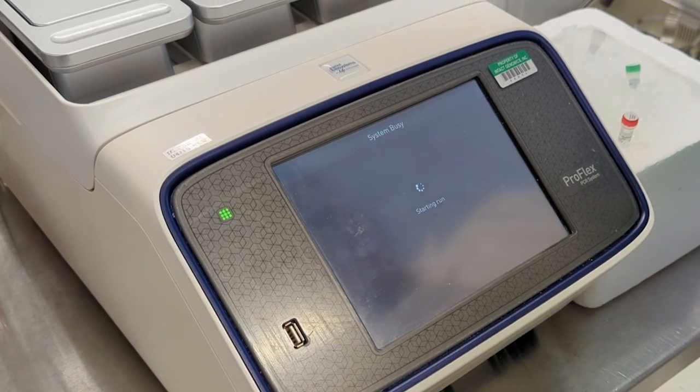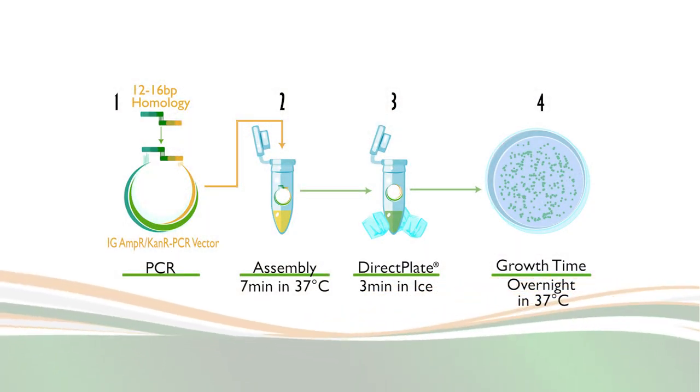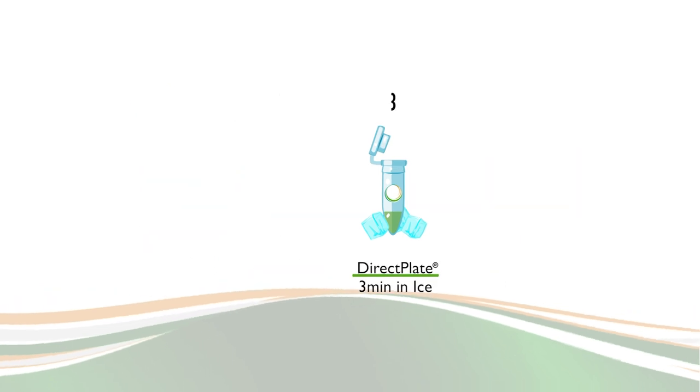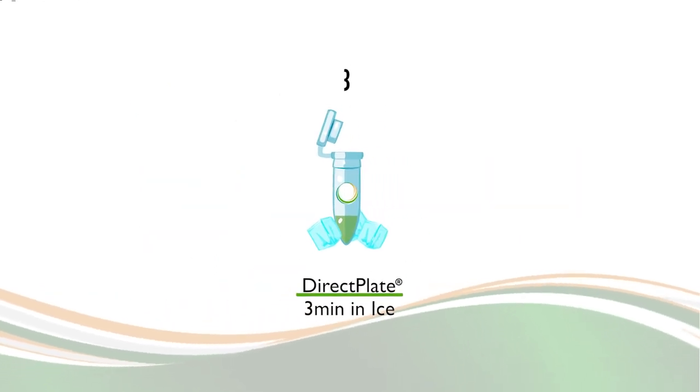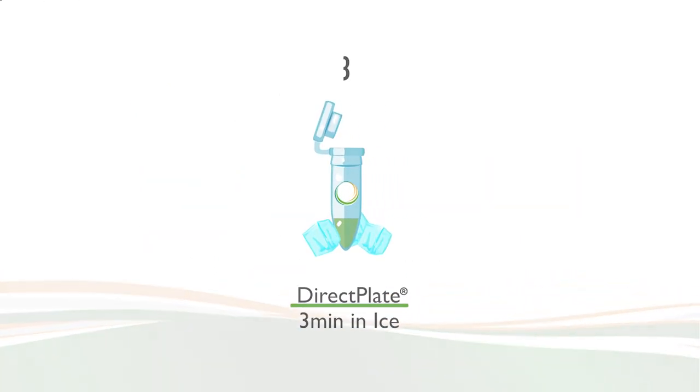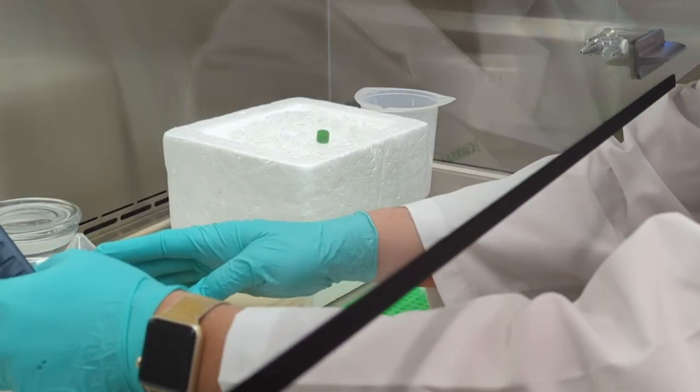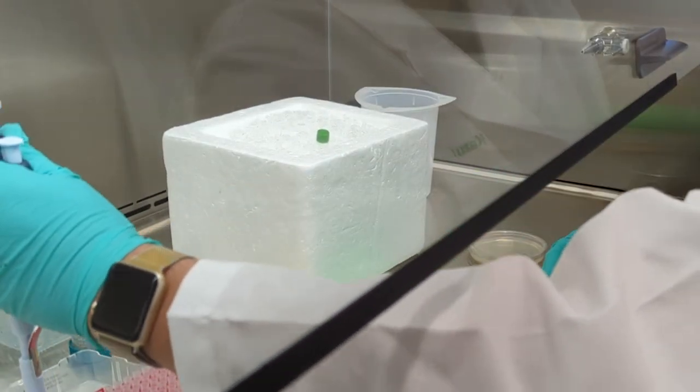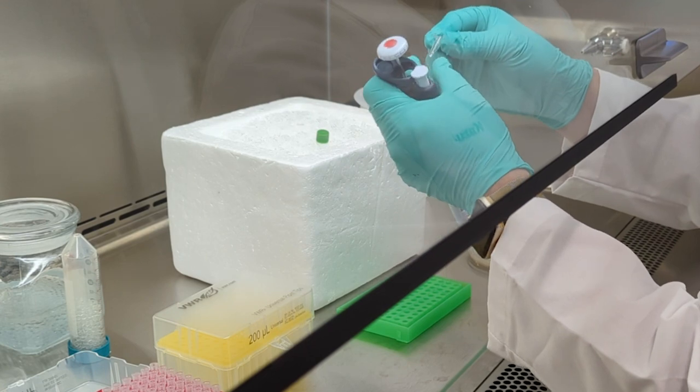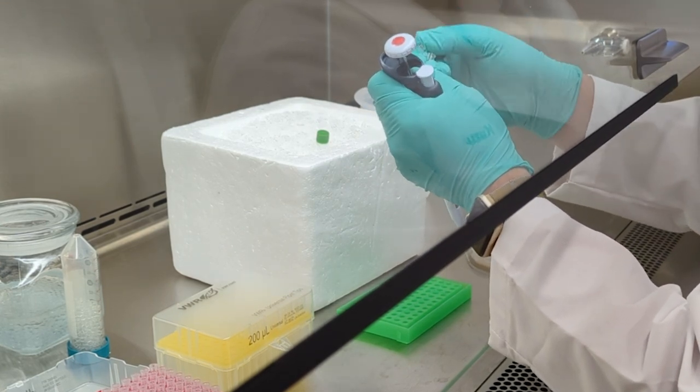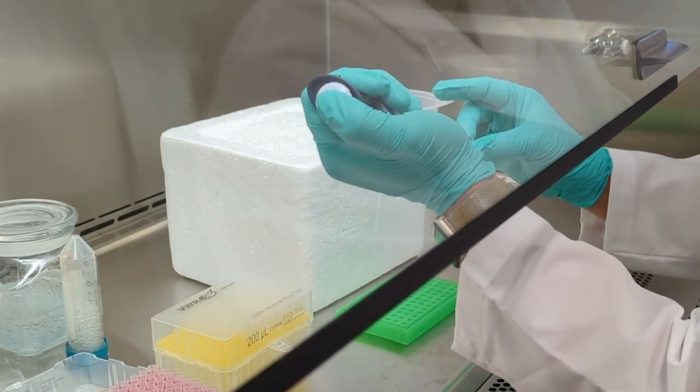The third primary step is the transformation step via the direct blade method. A key advantage to this kit is the inclusion of our new direct blade competent cells that simplify the transformation workflow by eliminating heat shock, lengthening incubations, and time consuming outgrowth procedures, saving nearly 90 minutes.